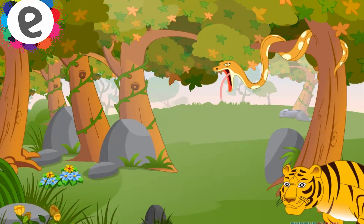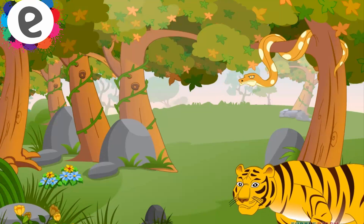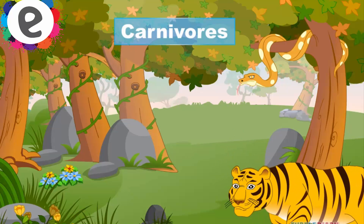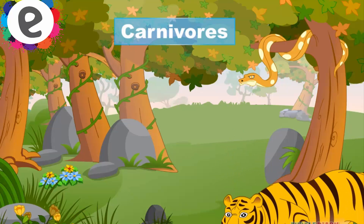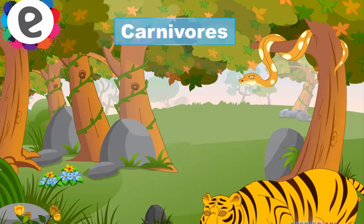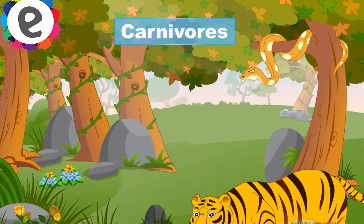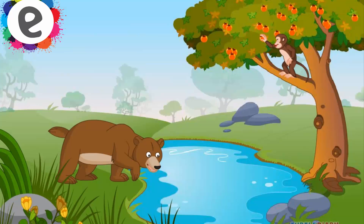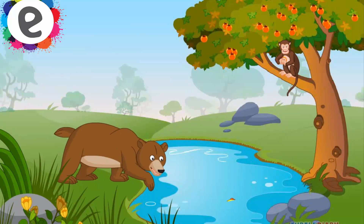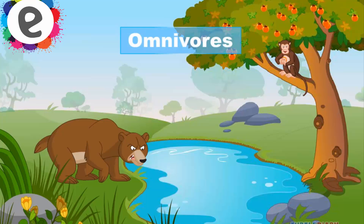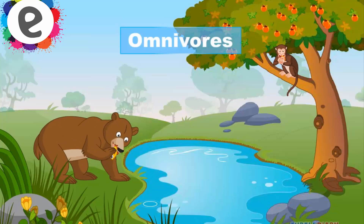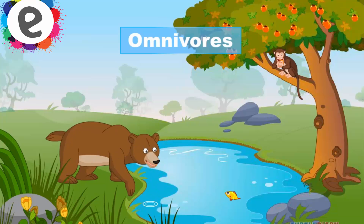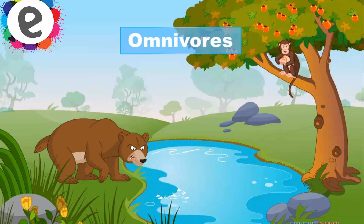Animals that eat only animals to get energy are called carnivores. For example, tigers, lions, snakes. Animals that eat both plants and animals to get energy are called omnivores. For example, monkeys and bears.